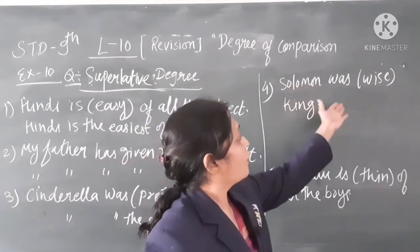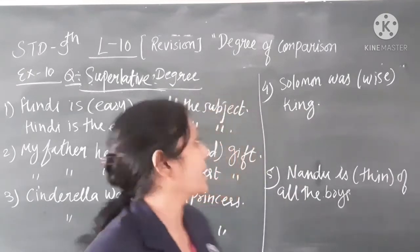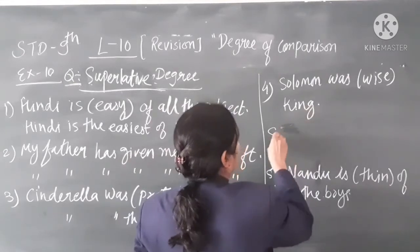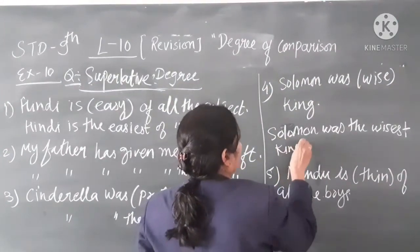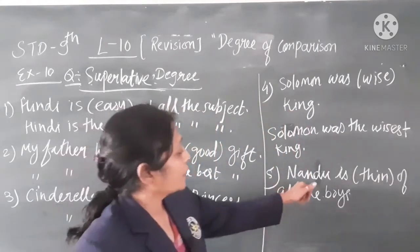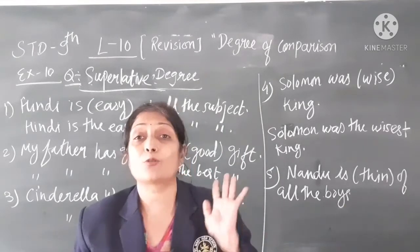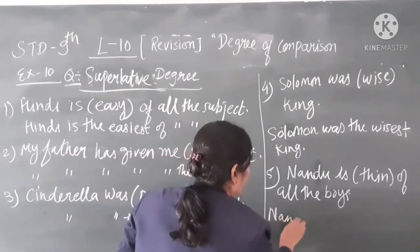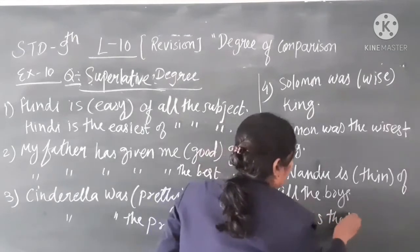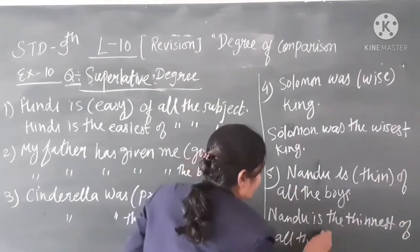For example: 'Solomon was the wisest king.' And: 'Nandu is thin of all the boys' — converting to Superlative: 'Nandu is the thinnest of all the boys.'